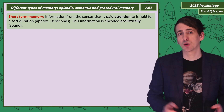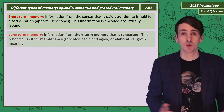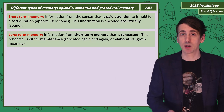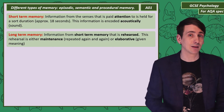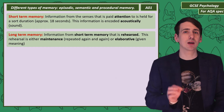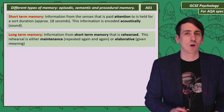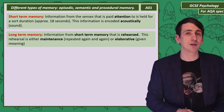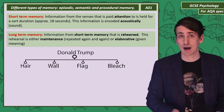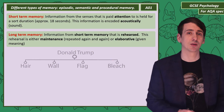Information that's in short-term memory can be put into long-term memory. You can rehearse information in short-term memory by saying it again and again — that's maintenance rehearsal — or by giving it meaning, known as elaborative rehearsal. What were the four words I put next to Donald Trump's name? Bleach, hair, wall, flag. Elaborative rehearsal.